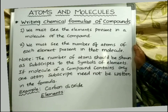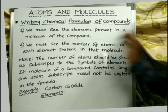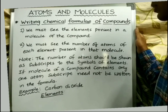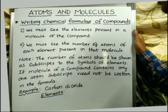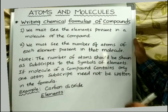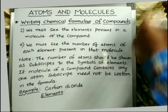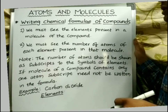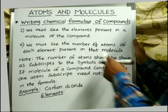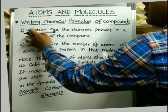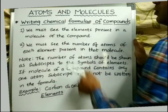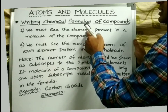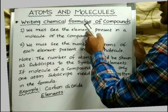The first rule is: we must see the elements present in the molecule of the compound. The molecule of the compound contains different types of elements, so according to the first rule, we should identify those elements and write the symbols of those elements.